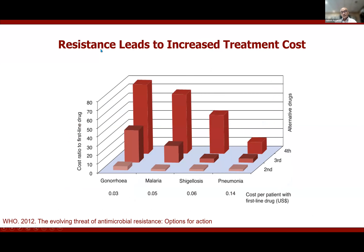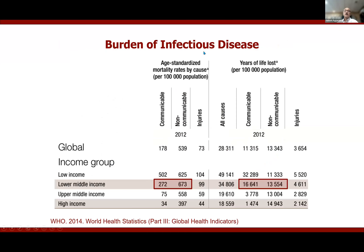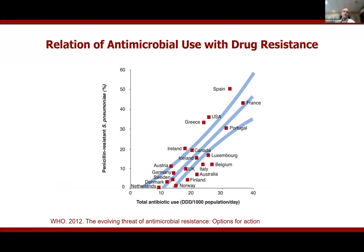Antimicrobial resistance has serious consequences. The cost of treating four major diseases in US dollars rises drastically when the organism is resistant to first-line drugs and alternative drugs must be used. This is a problem worldwide, but particularly for countries like India. In low- and middle-income countries, the burden of communicable disease exceeds that of non-communicable disease, making us especially vulnerable to organisms that become antimicrobial resistant.